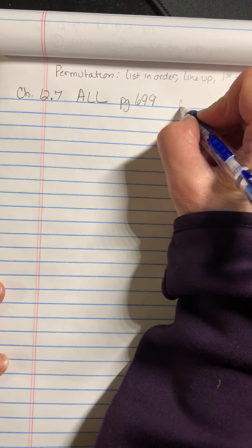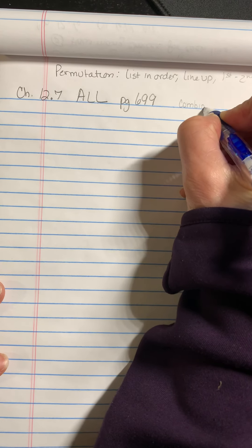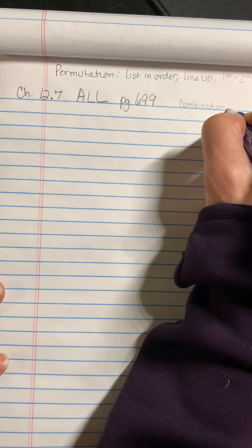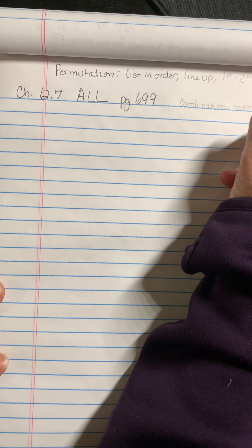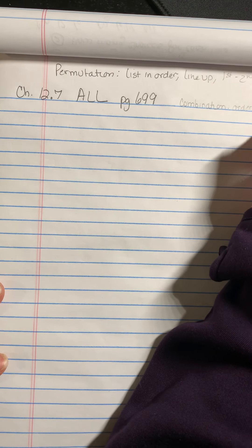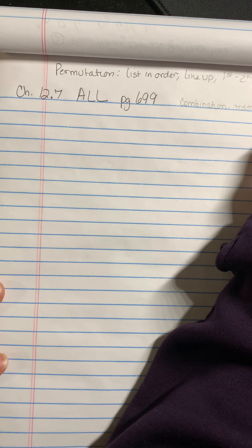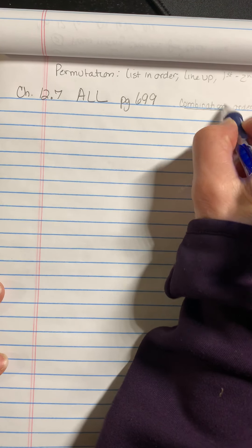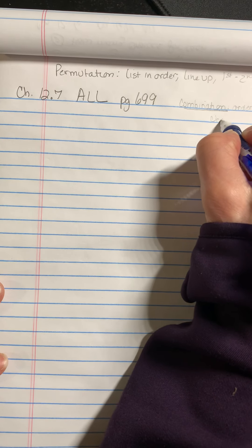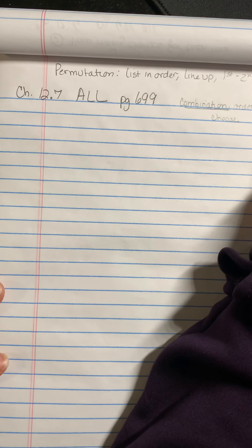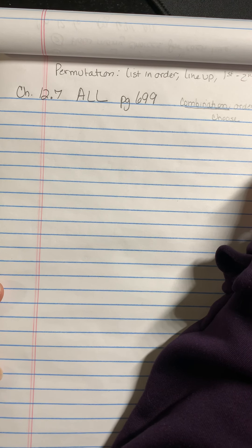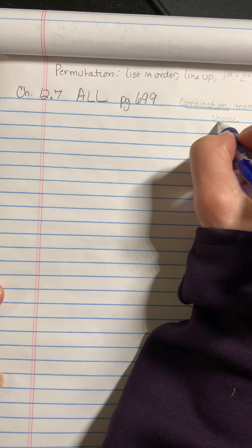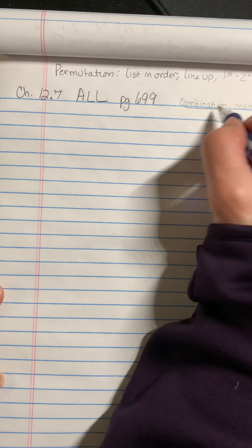A combination is when order doesn't matter. And when the order doesn't matter, it's just going to say to you choose, like choose three shirts or choose two flowers. If it says choose two flowers, then line them up. That's different. But if it's just saying just choose something, then that's a combination.